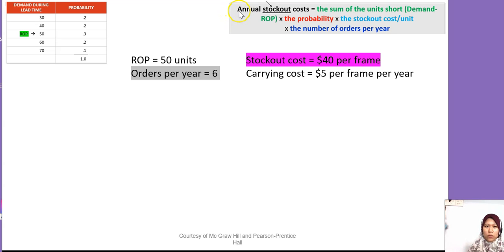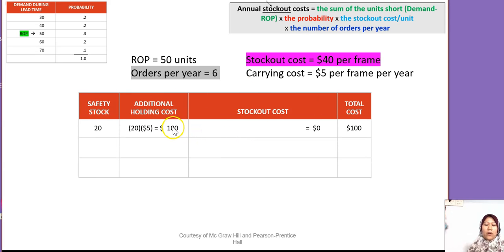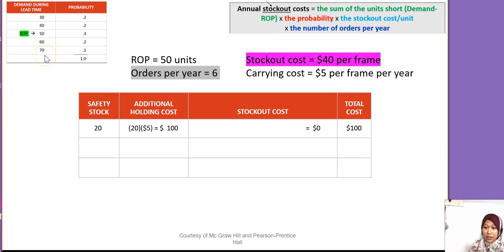The annual stockout cost formula is: Σ (units short) × probability × stockout cost × number of orders per year. Units short = demand minus ROP. The demand values and their probabilities are given. We need to create a scenario table. Since ROP = 50 and maximum demand = 70, there is a difference of 20, so we start the safety stock scenarios at 20.